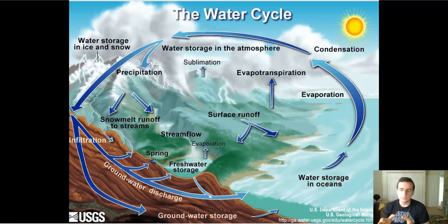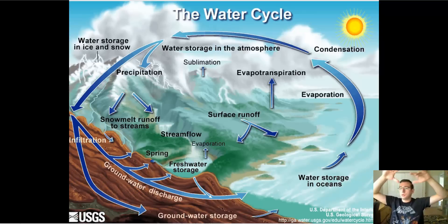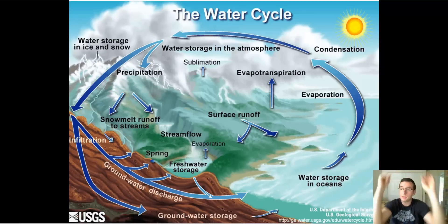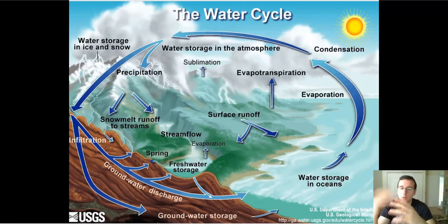Between the three of them, you're going to be adding water to the atmosphere. Once in the atmosphere, the water will rise and eventually lose heat to space and cool down. When that happens, it will become liquid again in the form of clouds. This process is called condensation.